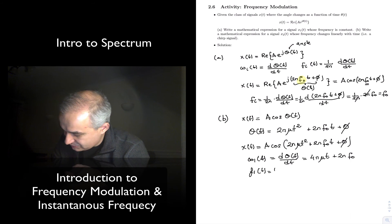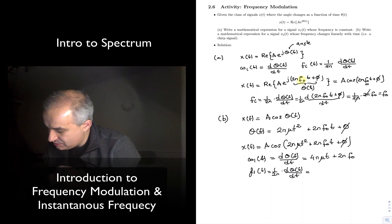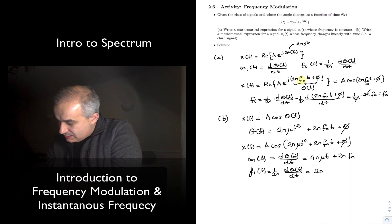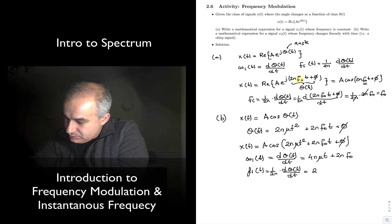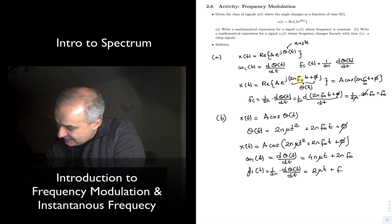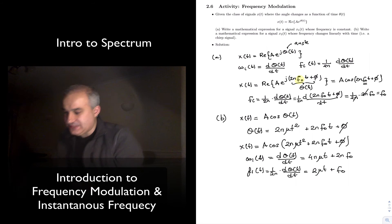Or, the instantaneous frequency 1 over 2π derivative of the angle gives us, the π goes away, so 2 μ t plus f0. So, this is a chirp signal, this is a signal whose frequency just keeps increasing, right?